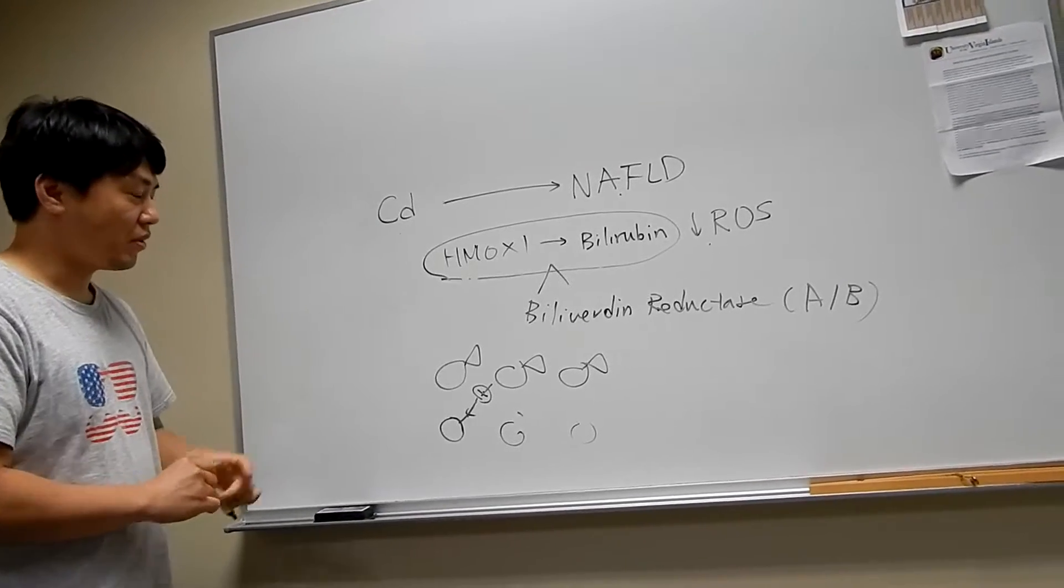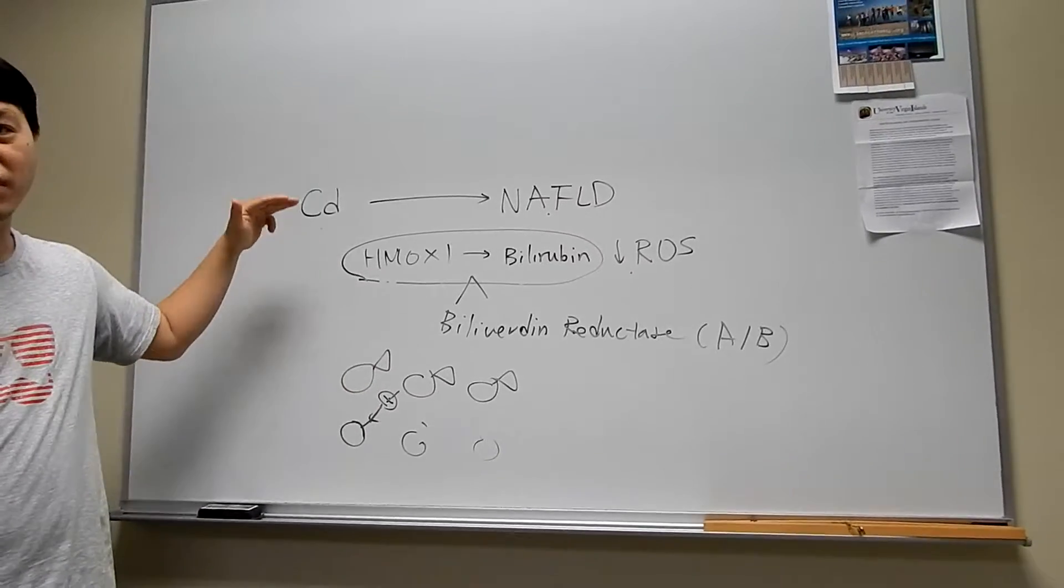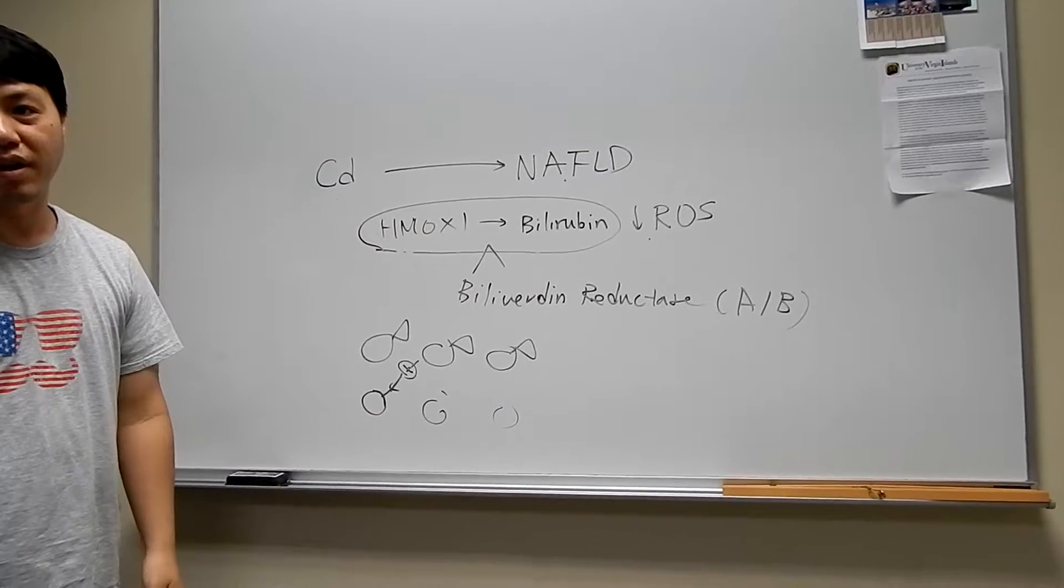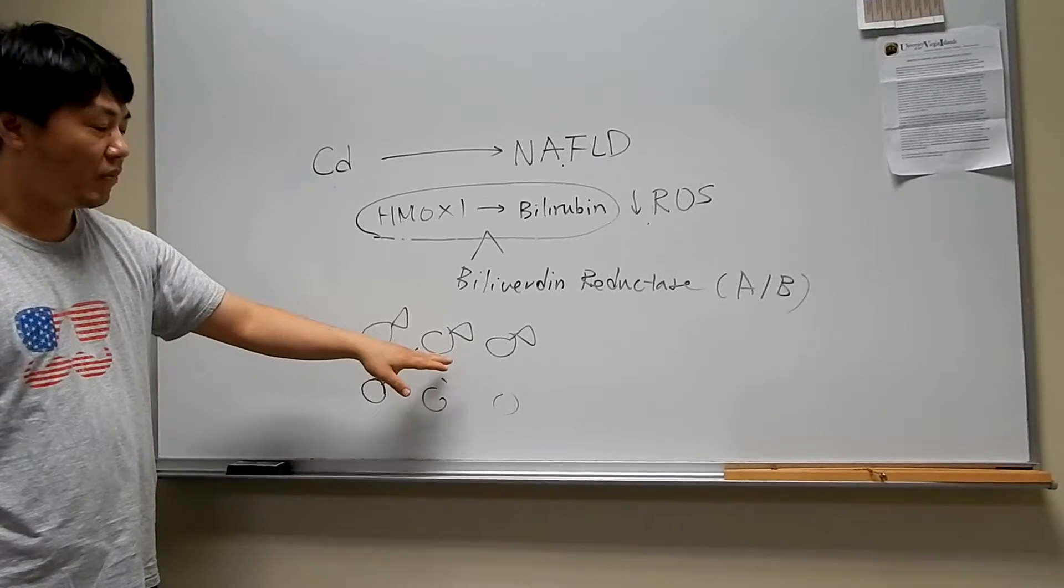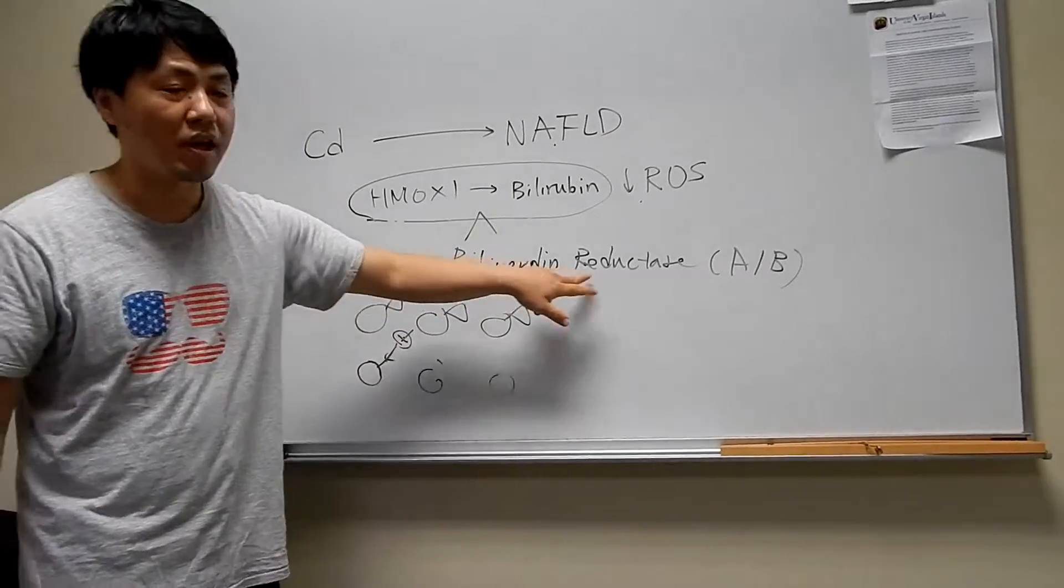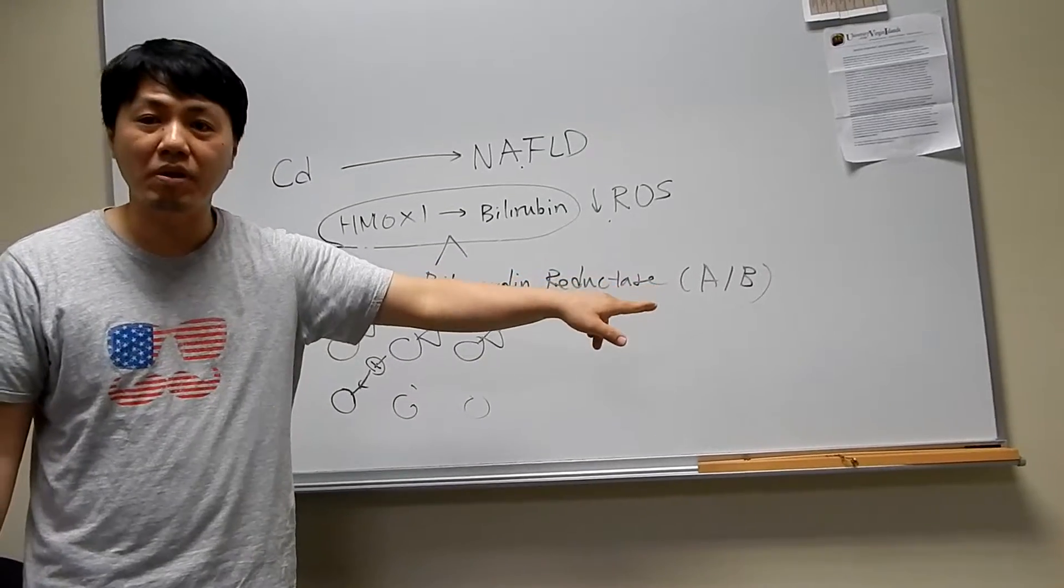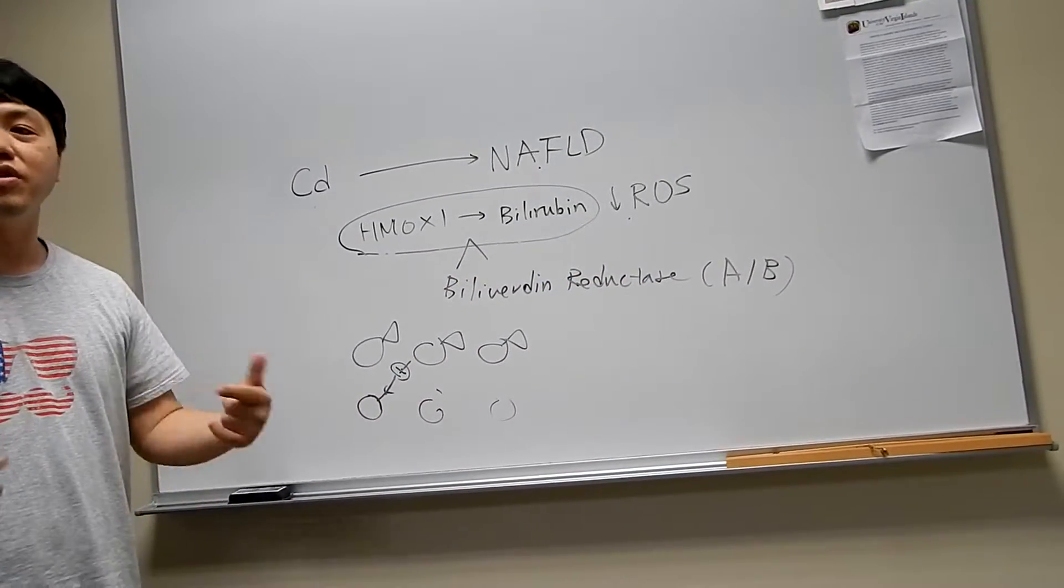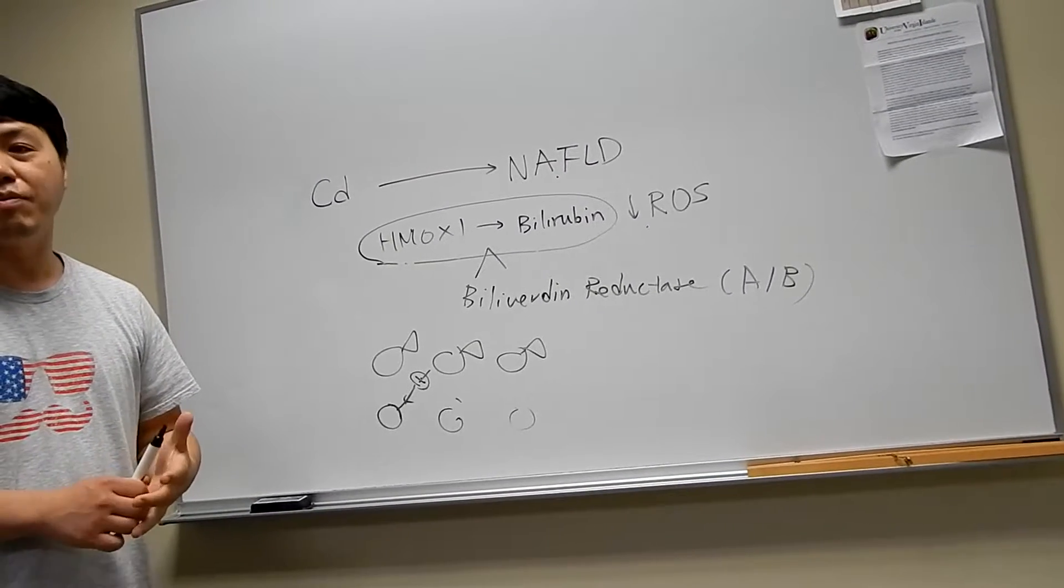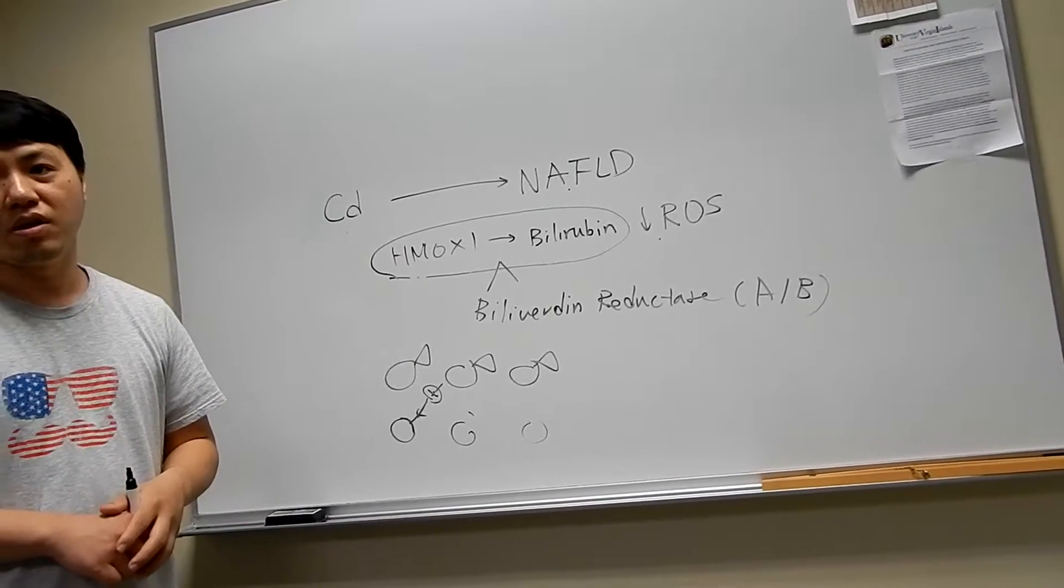So this fish will have more hemoxygenase. We're hypothesizing that this fish will be resistant to cadmium and will not have the liver disease that we described. And also, we're going to have other fishes. So we have three groups. Another fish will have bilirubin reductase A overexpressed, and another fish will have the type B overexpressed. So we'll see how much they are more resistant to the cadmium and the liver disease, and we can figure out the physiological role of each gene.